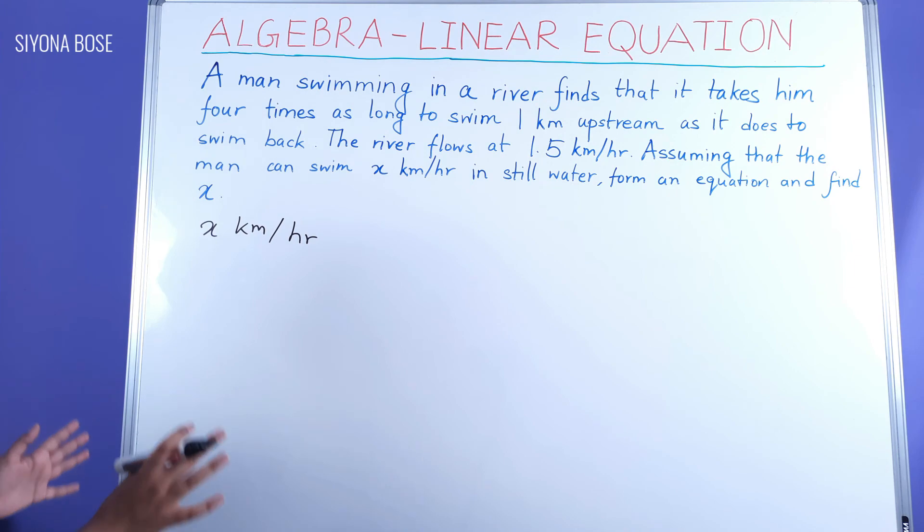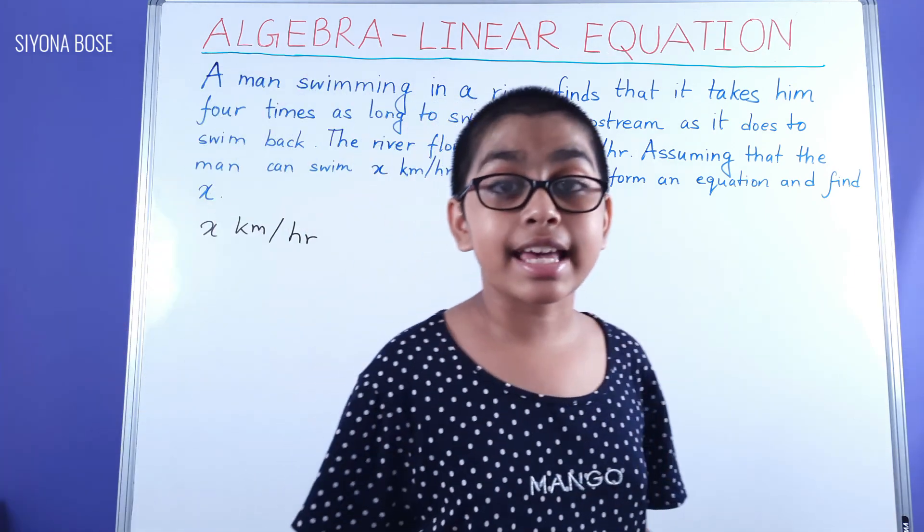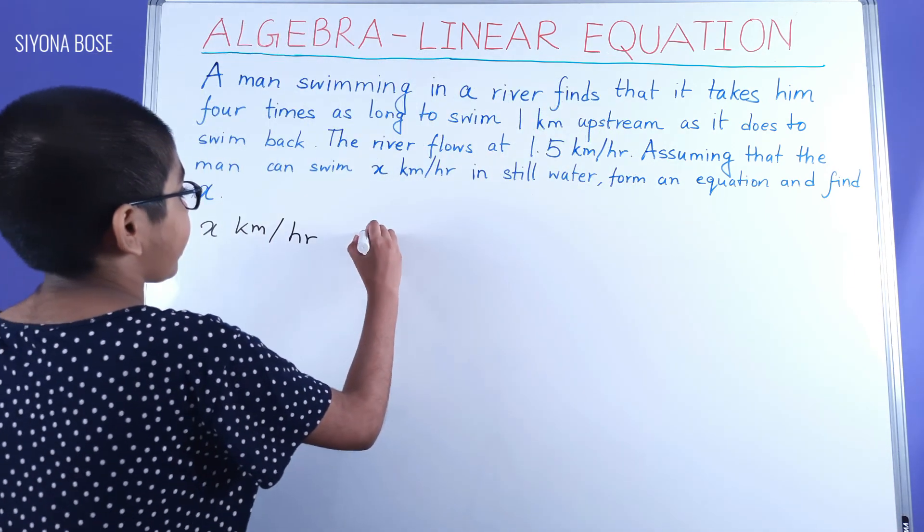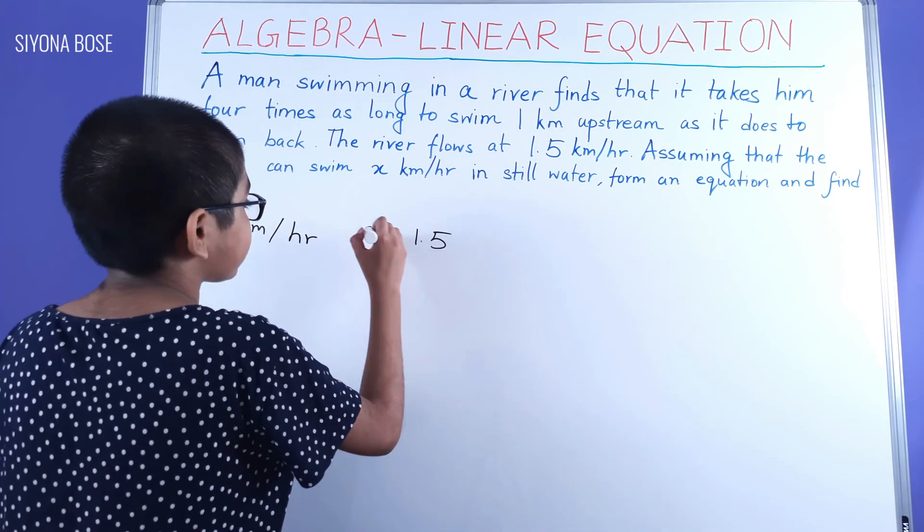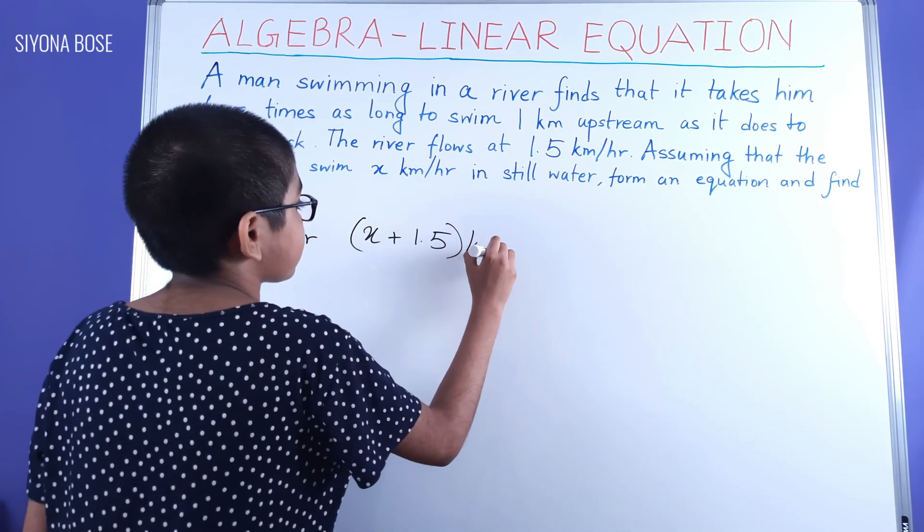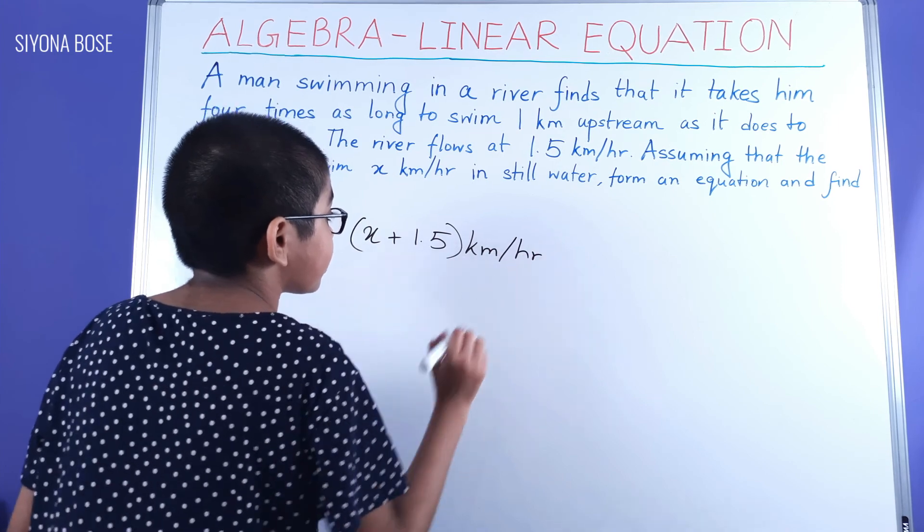The speed of the man, ultimate speed, downstream, is actually X plus 1.5 kilometers per hour.